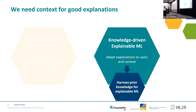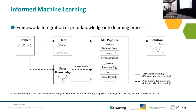Our idea is to harness prior knowledge that we may have available to reach exactly that. We thought about what this prior knowledge can look like, and we use a framework as a basis that has already looked at that in the past, not in the context of expandability but more generally. This is called informed machine learning, and the framework provides an opportunity to integrate prior knowledge into the learning process. You have a problem, you have training data available, and then you have the typical machine learning pipeline.